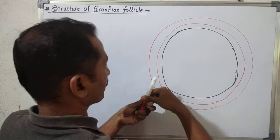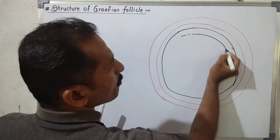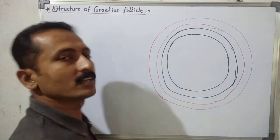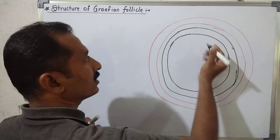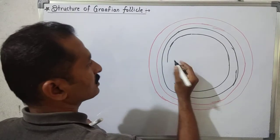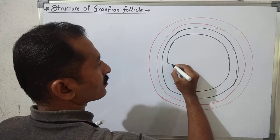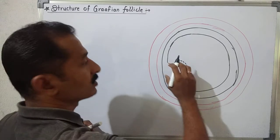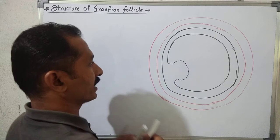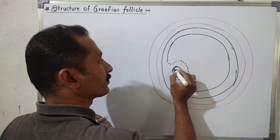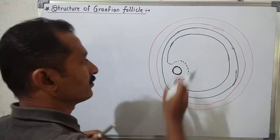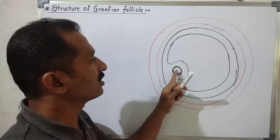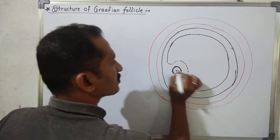Inner to the theca interna there is another layer called the membrana granulosa. Some cells of the membrana granulosa divide themselves to form certain cells surrounding the secondary oocyte — granulosa cells form a surrounding layer around the secondary oocyte.